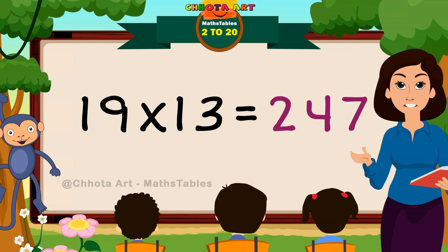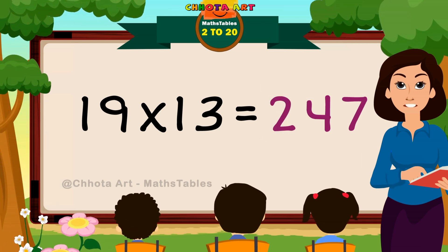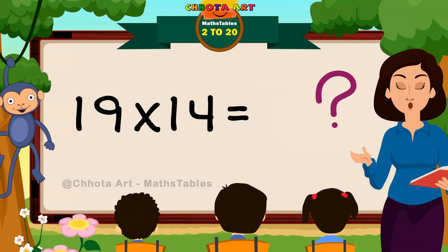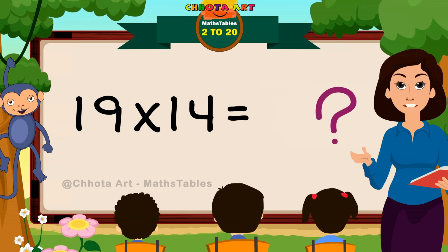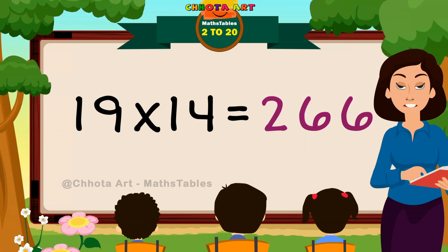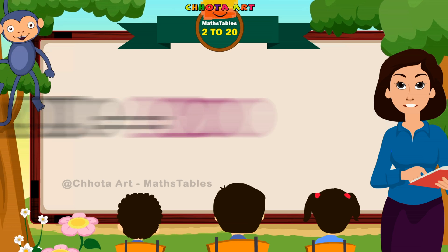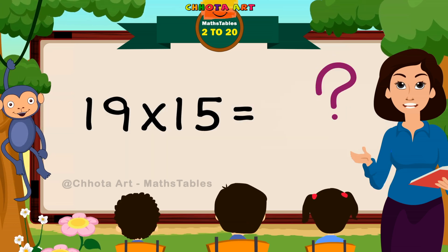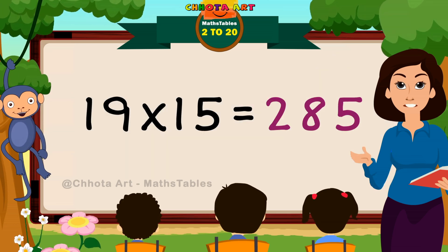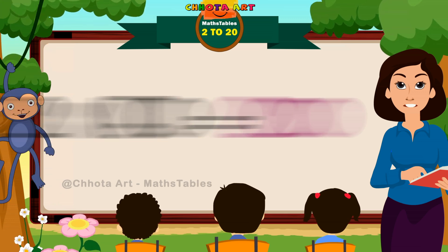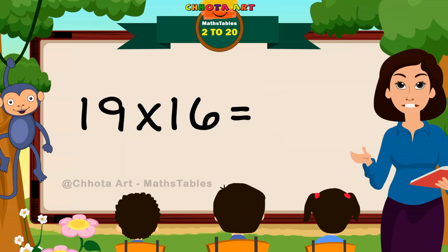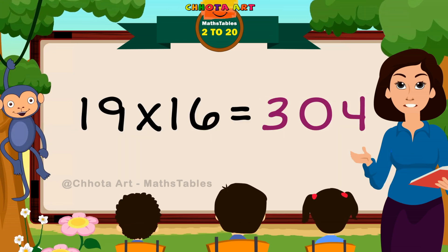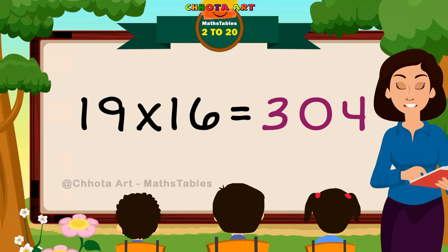19 times 13 is 247. 19 times 14 is 266. 19 times 15 is 285. 19 times 16 is 304.